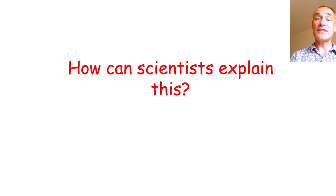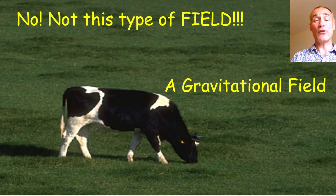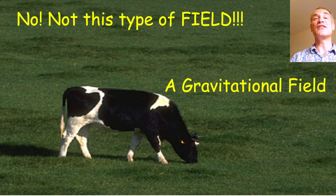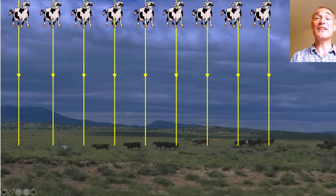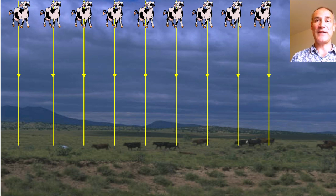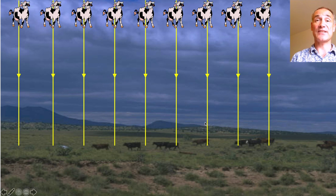So how do scientists explain this? Well they use the idea of a gravitational field — a space where mass experiences a force. So wherever I drop the cow, and we're using the cow to explore the field lines of the gravitational field, it should go straight down. These are the field lines and the direction shows the force on the mass — which is the cow — and which way it acts.